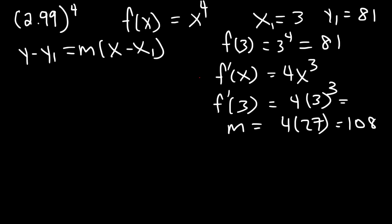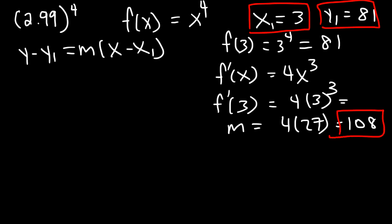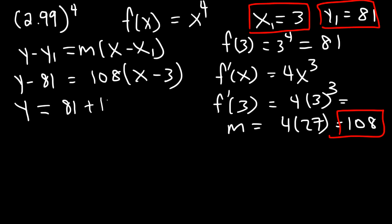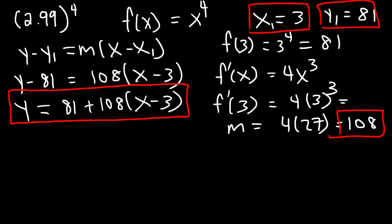So now we have x1, y1, and the slope m. Let's plug it in to this equation: y minus y1 is equal to m times x minus x1. The next thing we need to do is add 81 to both sides and move it to the other side. So it's going to be y equals 81 plus 108 times x minus 3. We really don't need to distribute the 108, so I'm going to leave it in this form. This is the tangent line equation at x equals 3.